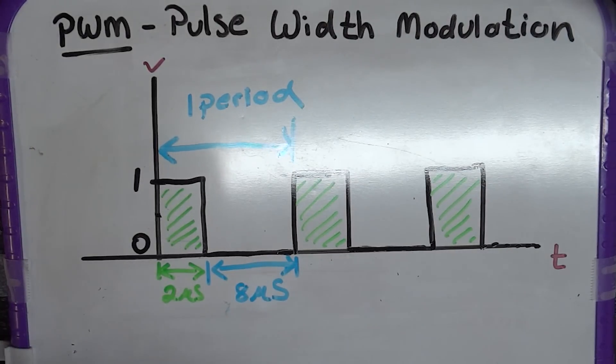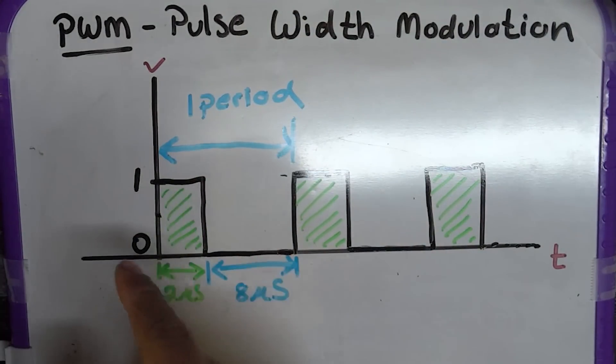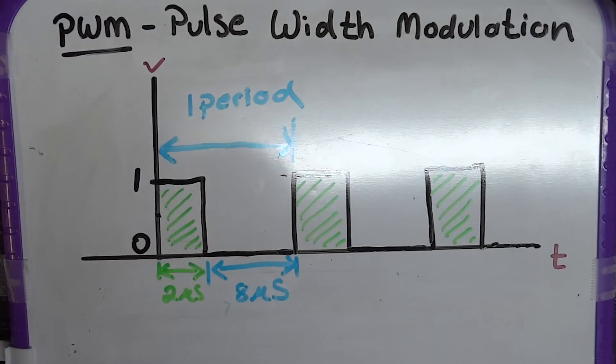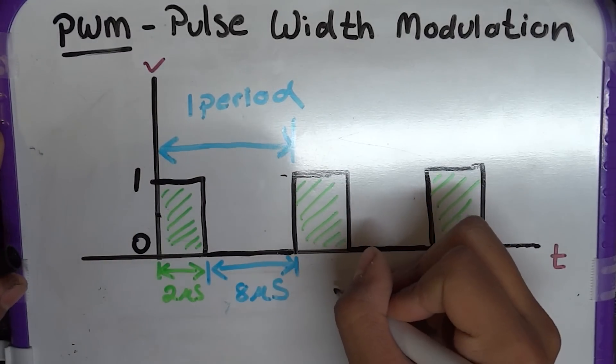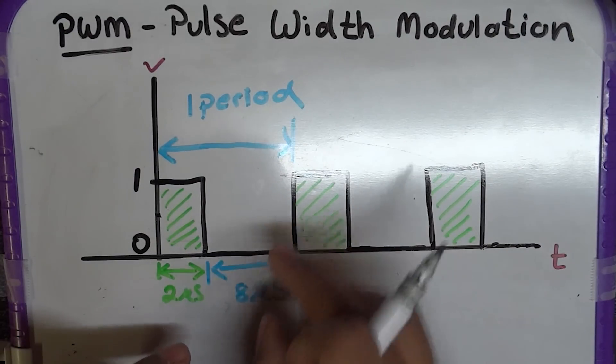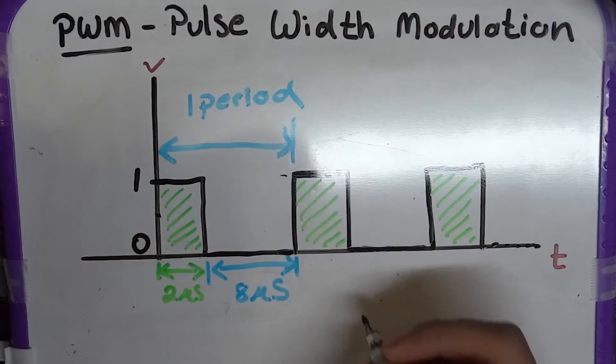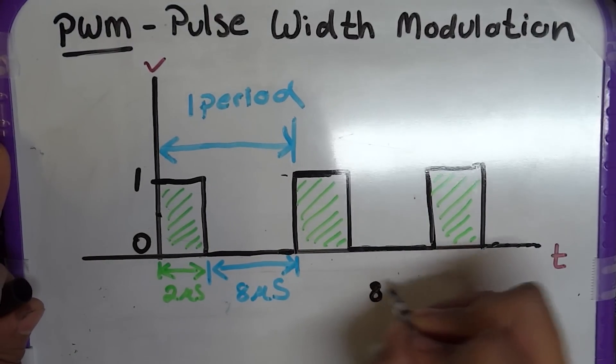So the period is the total time it takes before it starts repeating. So in other words, one period. Okay. So let's go ahead and do the math. This is really easy. You can just, it's the sum of the high and the low. So this was 8 microseconds.